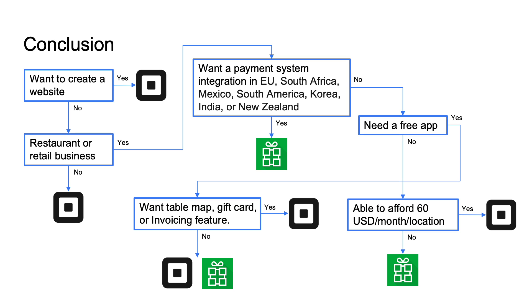Next, regarding pricing: if you need a free application and still want to use a table map, gift card, or invoicing feature, you need to use Square. But otherwise, you have the choice of Royverse for both POS applications. Also, if you want to use a premium version and can afford more than 60 USD per month per location, you can choose Square. But otherwise, you can use Royverse's premium features at lower prices.